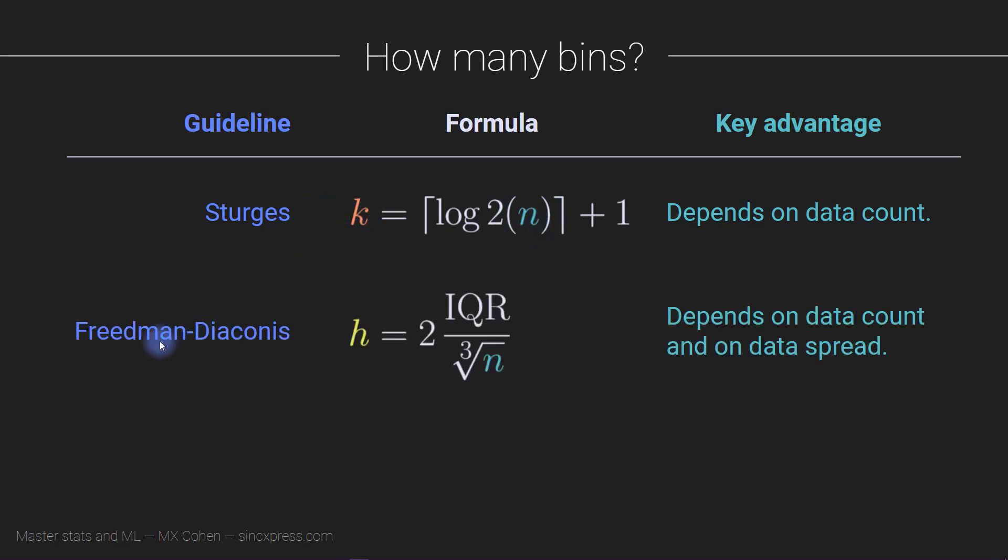Next we have the Freedman-Diaconis rule, which is sometimes just abbreviated as FD, the FD rule or FD recommendation. And here we're not specifying k directly. Instead, we're specifying h, which is the width of the bins, from which we can compute the number of bins as I showed in the previous slide. I don't know where this formula comes from or how Freedman and Diaconis derived this rule, but when you look at it for a minute, you can see that it's a pretty sensible rule. So it is the IQR, which is the interquartile range. Remember, this is the difference in data values between quartile 1 and quartile 3. In other words, this is the range that contains 50% of your data, and that's divided by the cube root of n.